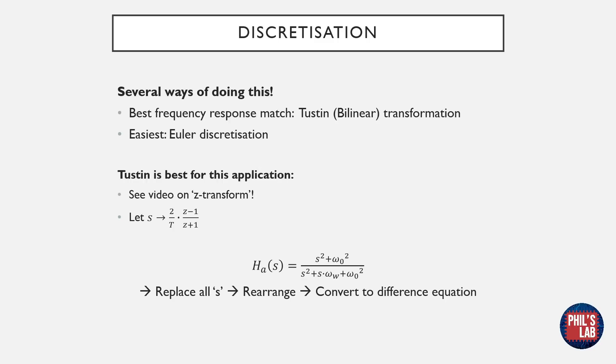Before we continue, I'd urge you to watch the video on my channel covering the Z transform, as I'll assume prior knowledge for the next part. Essentially, to apply the Tustin Transform, we need to replace all s's with this expression over here. Then we rearrange to form a discrete time transfer function in the Z domain, and finally we can use that to give our difference equation.